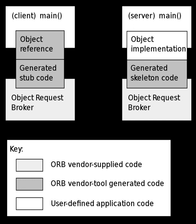CORBA uses an interface definition language to specify the interfaces that objects present to the outer world, then specifies a mapping from IDL to a specific implementation language like C++ or Java. Standard mappings exist for ADA, C, C++, C++11, COBOL, Java, Lisp, Object Pascal, Python, Ruby, and Smalltalk. Non-standard mappings exist for C#, Erlang, Perl, TCL, and Visual Basic, implemented by object-request brokers written for those languages.